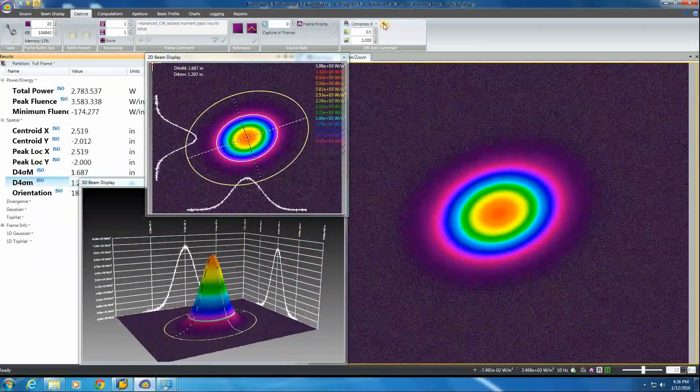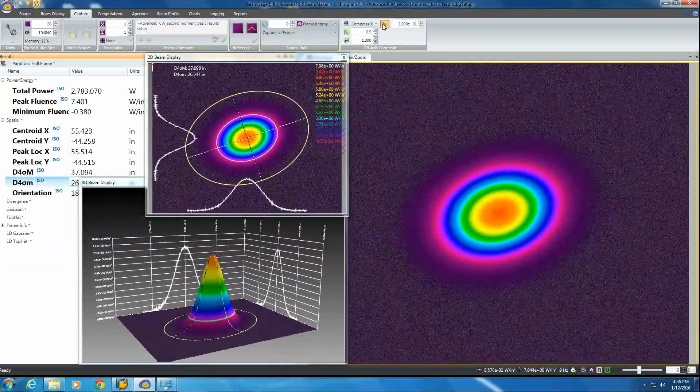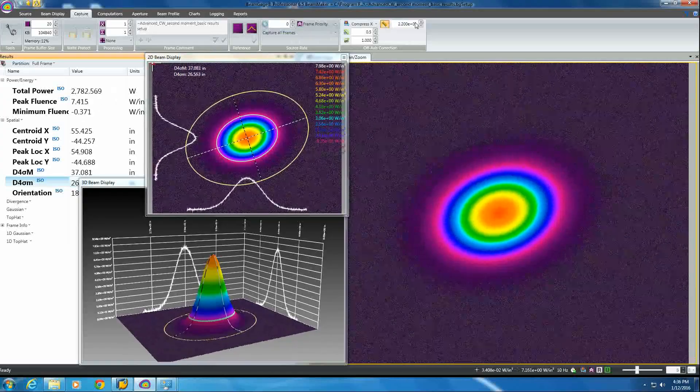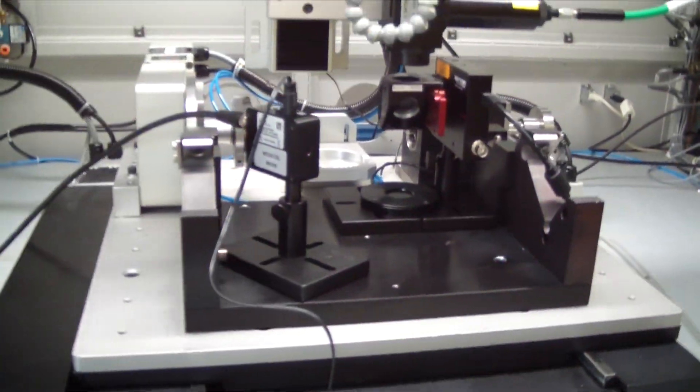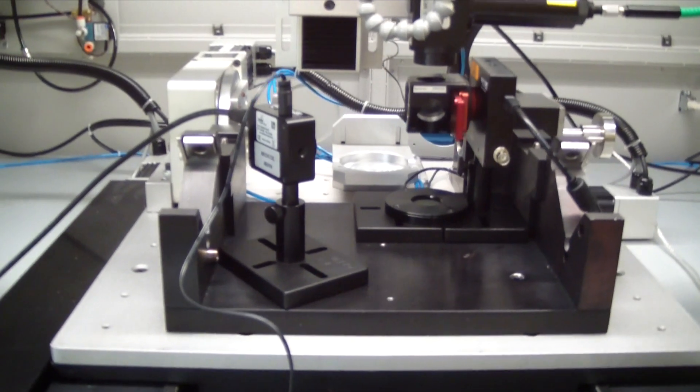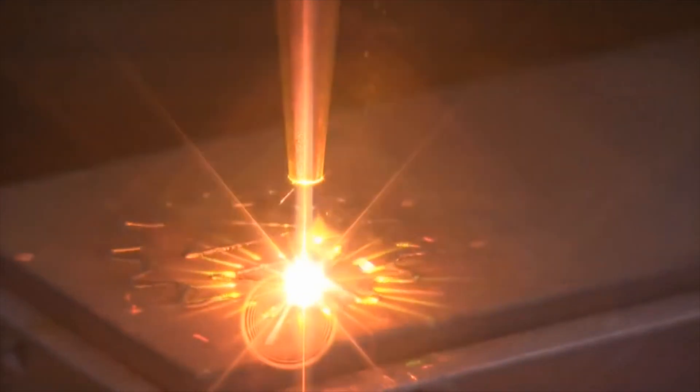Consistent monitoring of these laser parameters can alert the operator to even small changes in laser system performance. This permits adjustments or repairs to be made to the laser or beam delivery system before degrading processing conditions lead to inferior quality products or production delays.